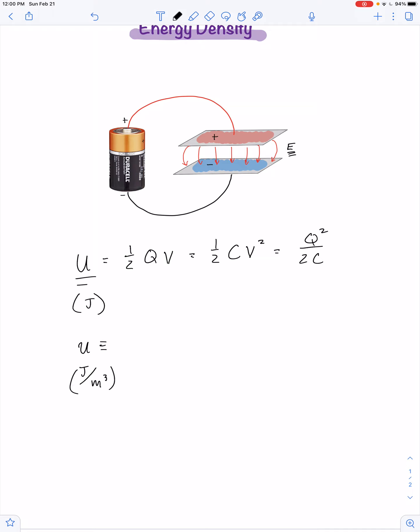In other words, we're defining energy density as the energy per unit volume. So this parallel plate capacitor has a spacing of d, and the plates have an area of a.